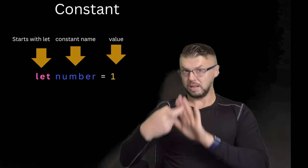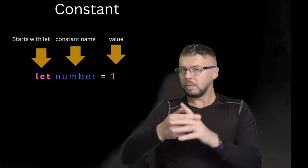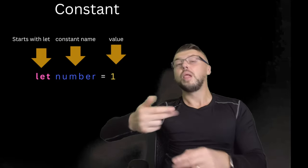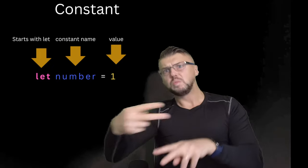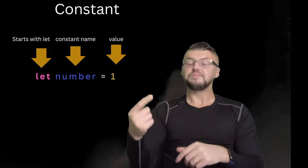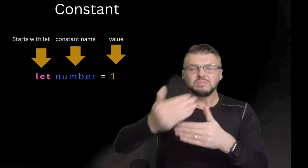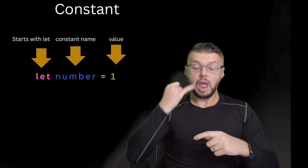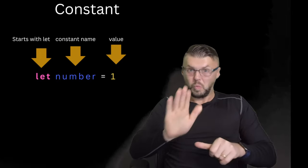Now let's talk about constants. Constants start with let, L-E-T. Then it's followed by the constant name and we assign a value. And that is a constant. As a constant, it cannot be changed further in our program. Even if we decide to change it, the program won't run.